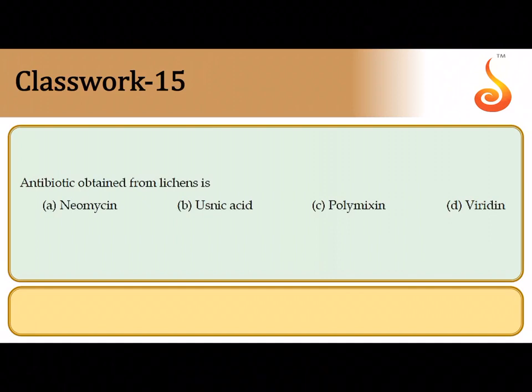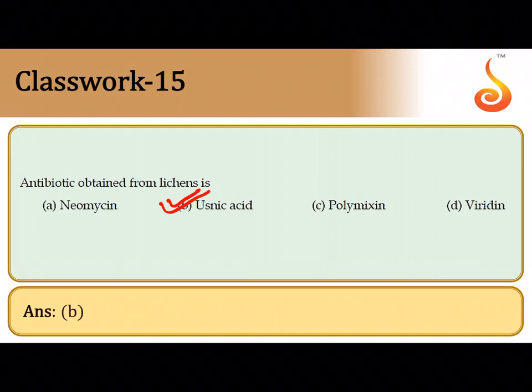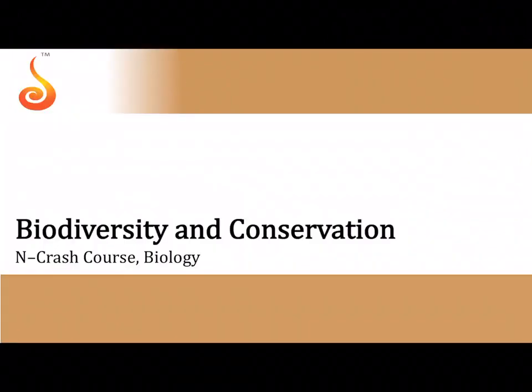The fifteenth question says the antibiotic obtained from lichen. There is a lichen called Usnea and it is a source of an antibiotic called usnic acid. The correct answer is option B. Now moving on to the next chapter: Biodiversity and Conservation.